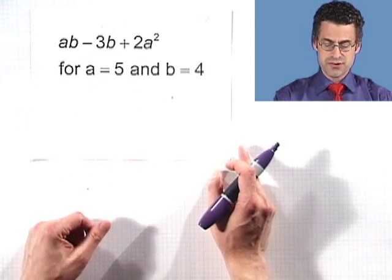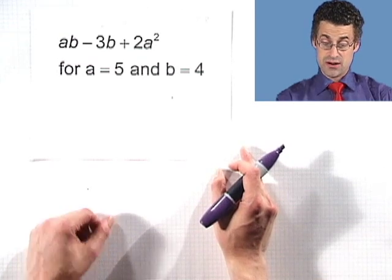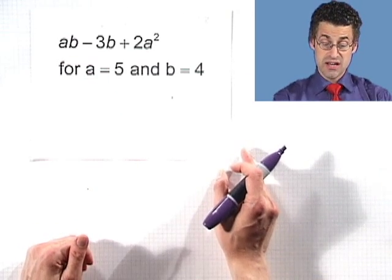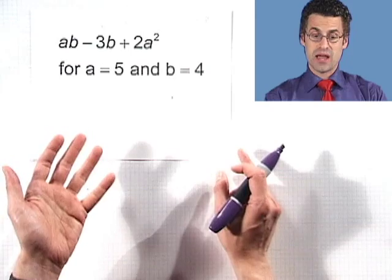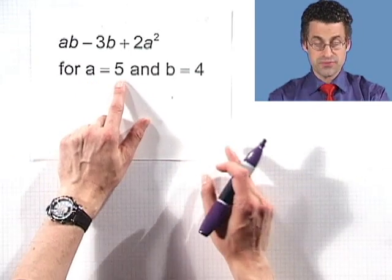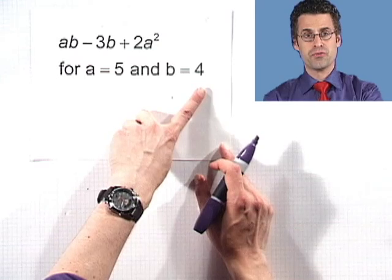See how we can multiply and combine these expressions? Let's take a look at this different one: ab minus 3b plus 2a squared. That's an algebraic expression. And I want us to evaluate it at the moment when a equals five and b equals four.